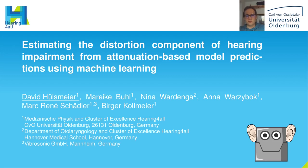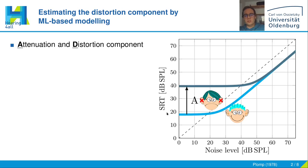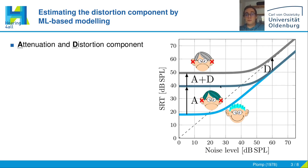First of all, what is the distortion component? On the right you can see the SRT — the speech recognition threshold — which denotes the point where 50% of the spoken words are understood, depicted across the noise level. For normal hearing listeners and people who have the attenuation component of hearing impairment, so increased absolute hearing thresholds, their hearing threshold defines their SRT in rather calm environments. As the noise level increases, hearing impaired people with the A component can get as good as normal hearing listeners. People who also suffer from the distortion component have more difficulties understanding speech in quiet, but also in noisy environments. The A component directly correlates with the absolute hearing threshold, whereas there is no such direct measure for the D component.